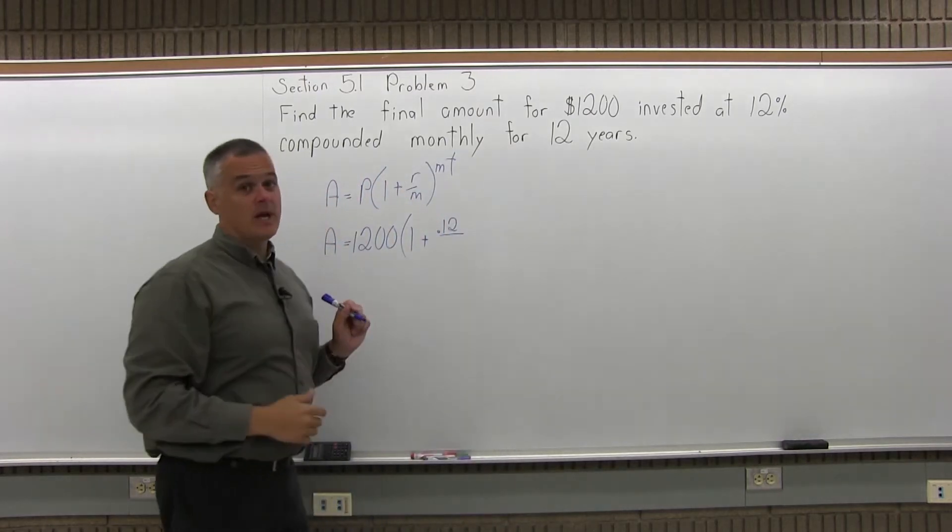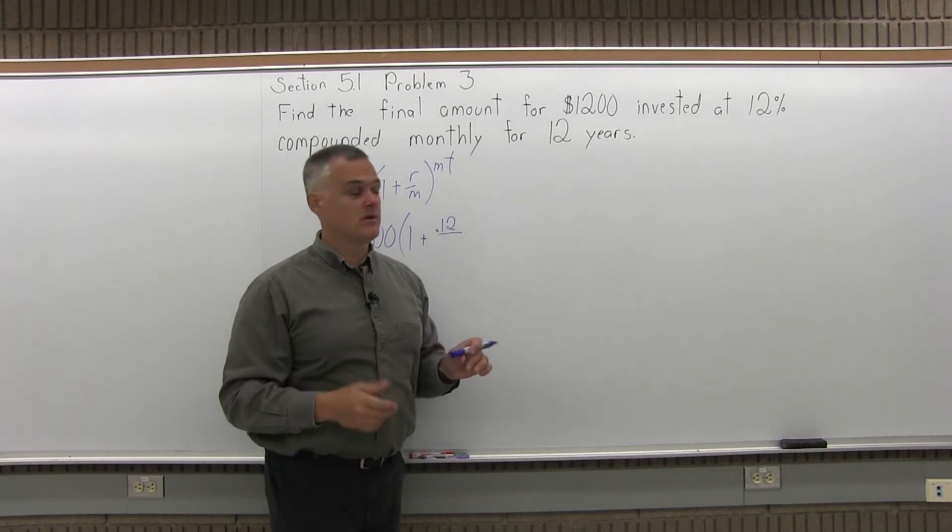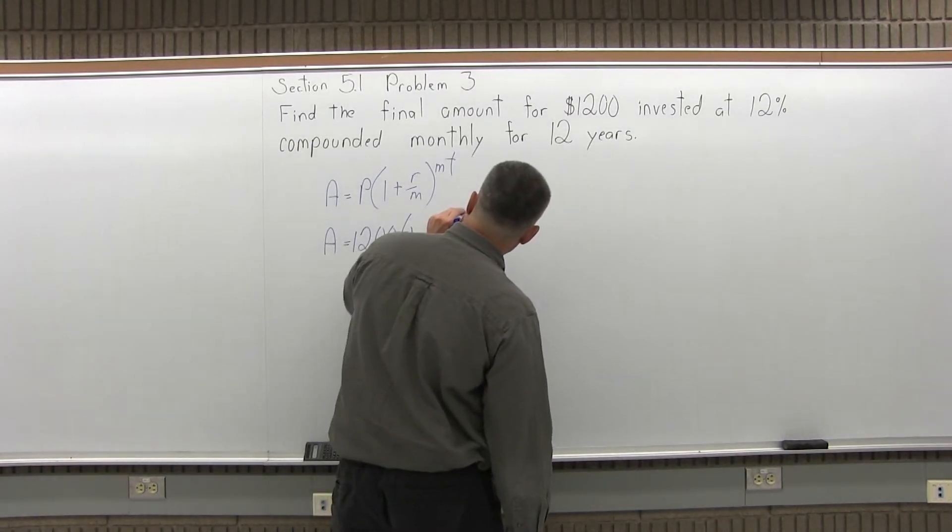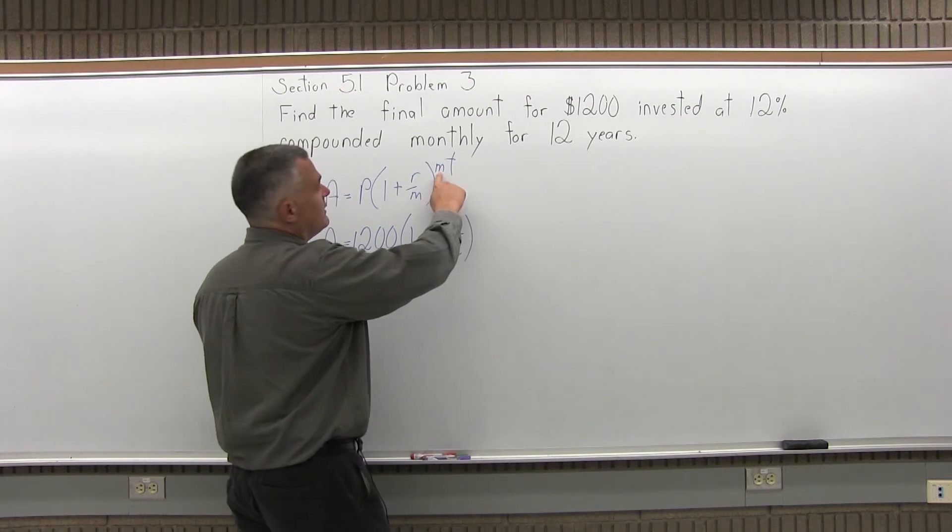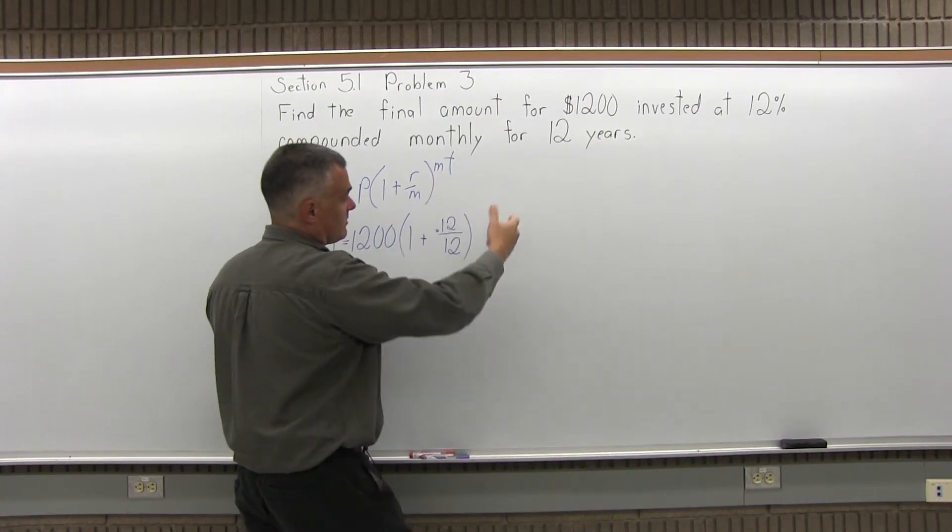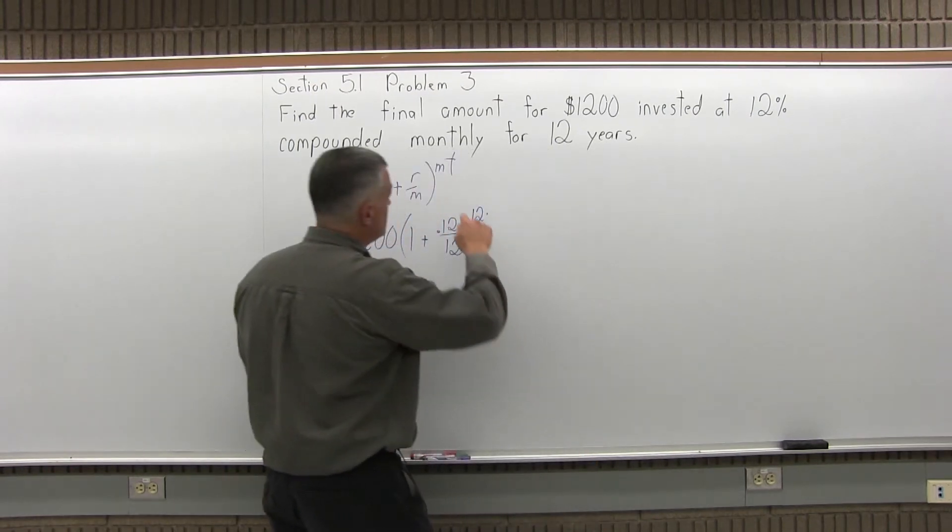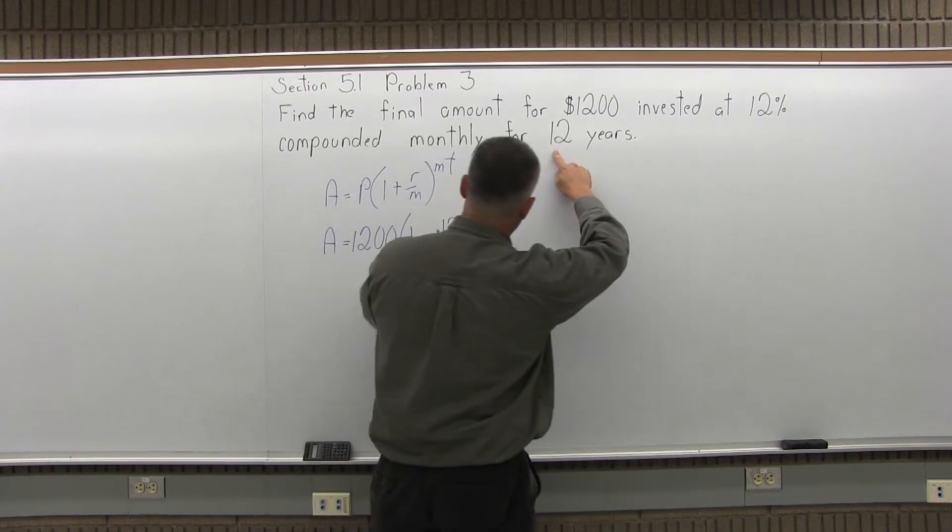Over M, the number of times compounded per year. So for monthly compounding M is 12 because there's 12 months in a year. And then close the parentheses there's an exponent of M times T. So again M is the number of times compounded per year so that's 12 times T the number of years, the time in years so that's 12 years.